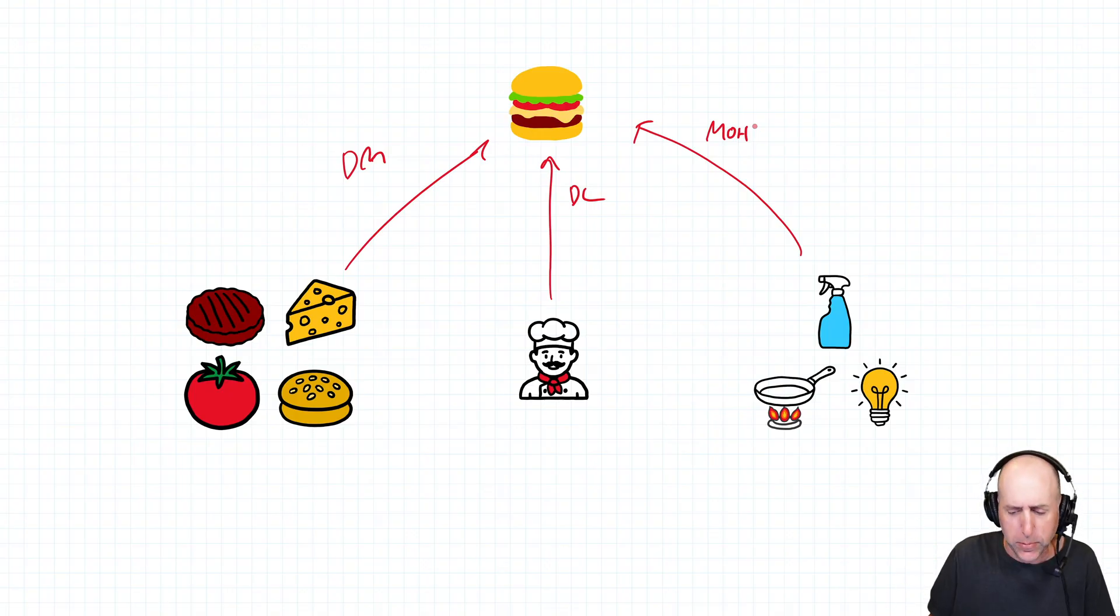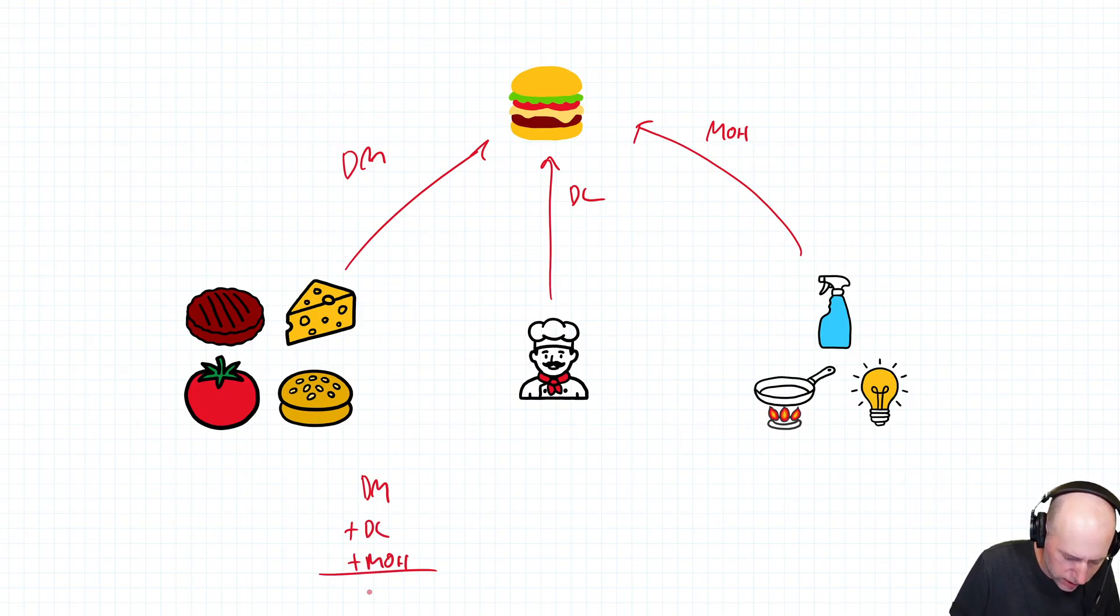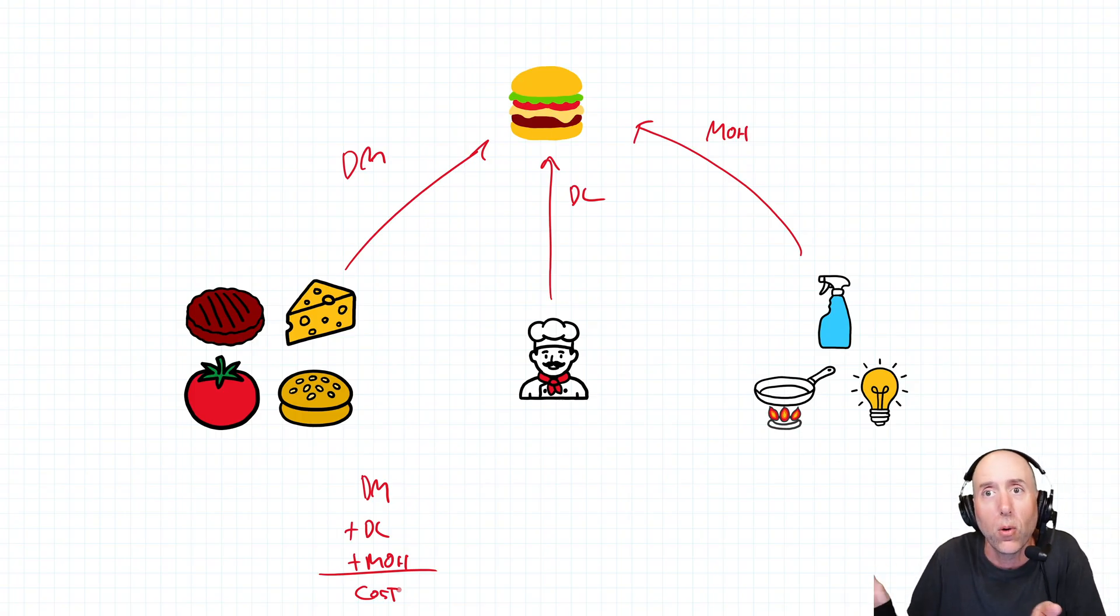And so we've learned all different ways of tracking or applying that overhead cost into the cost of our burger. This chapter though focuses on: is this a variable or a fixed cost? Because we know the material plus the labor plus the overhead equals our cost, right? That's our product cost.